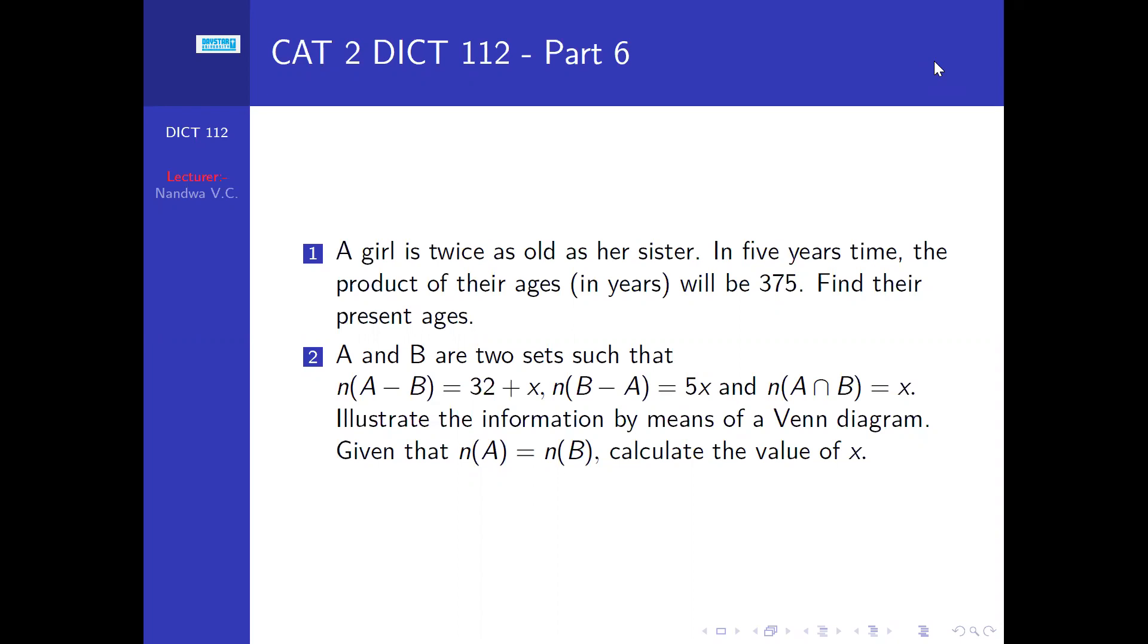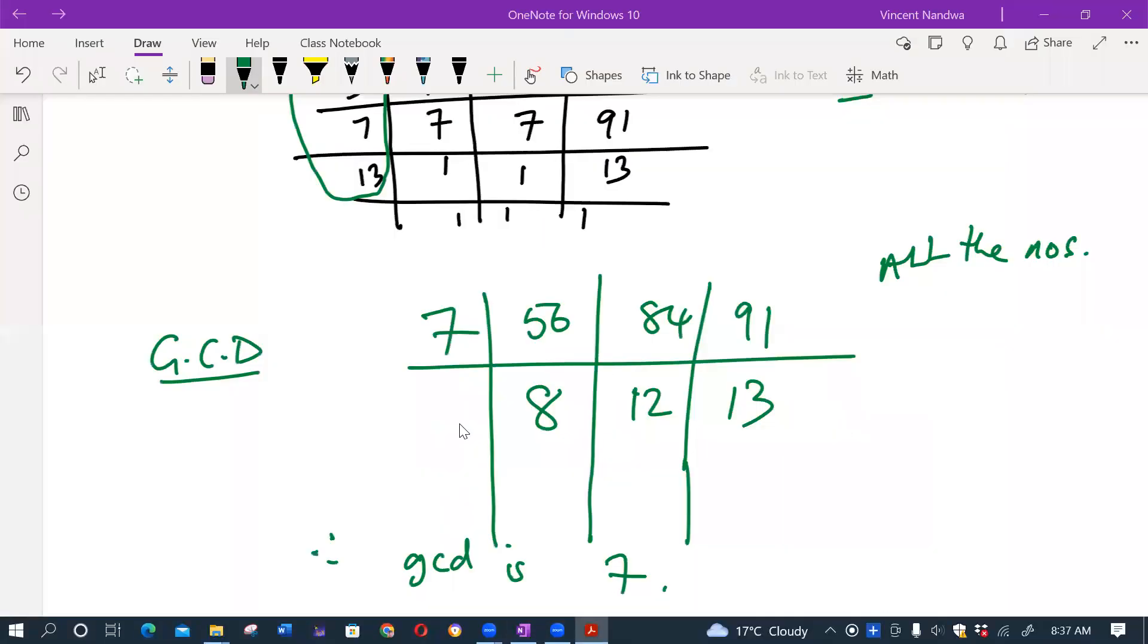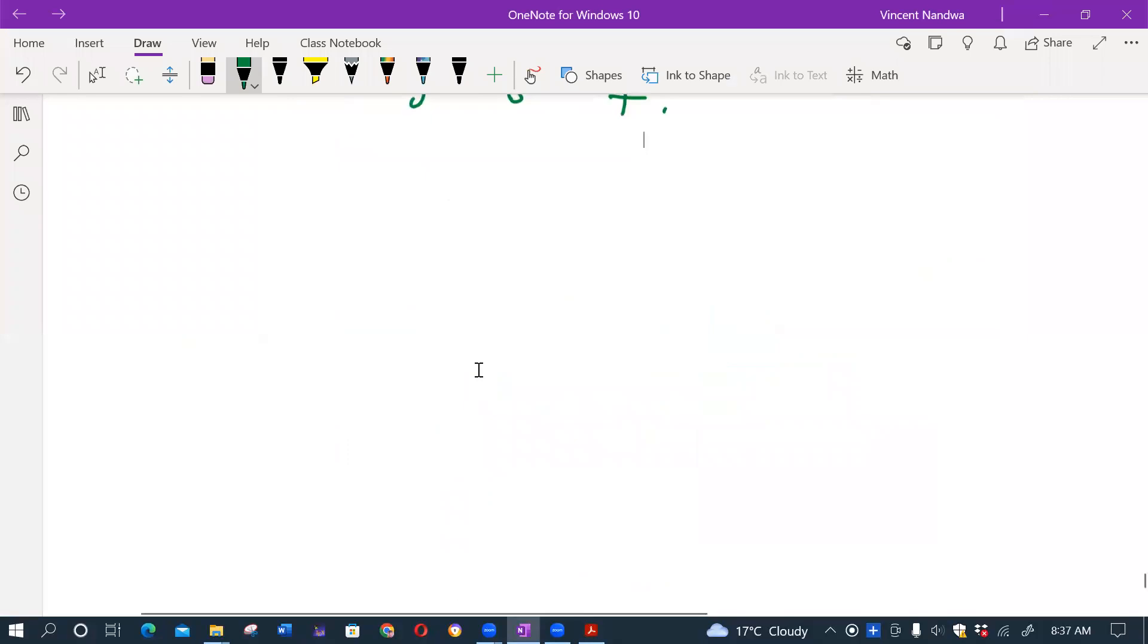And then equation two is testing on sets. A and B are two sets such that cardinality of A minus B is 32 plus x, cardinality of B minus A is 5x, and cardinality of A intersect B is x. We have to illustrate this information on a Venn diagram, and given that cardinality of A equals cardinality of B, find the value of x.